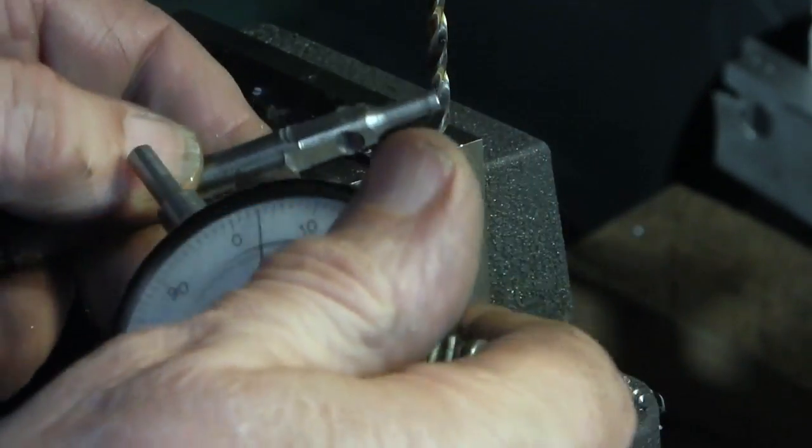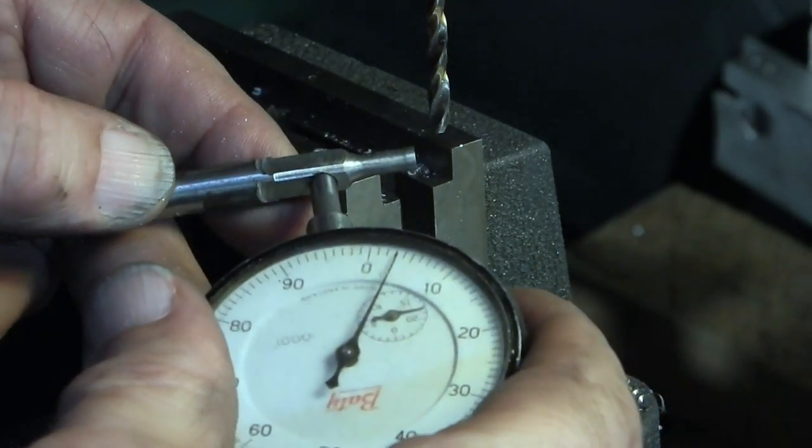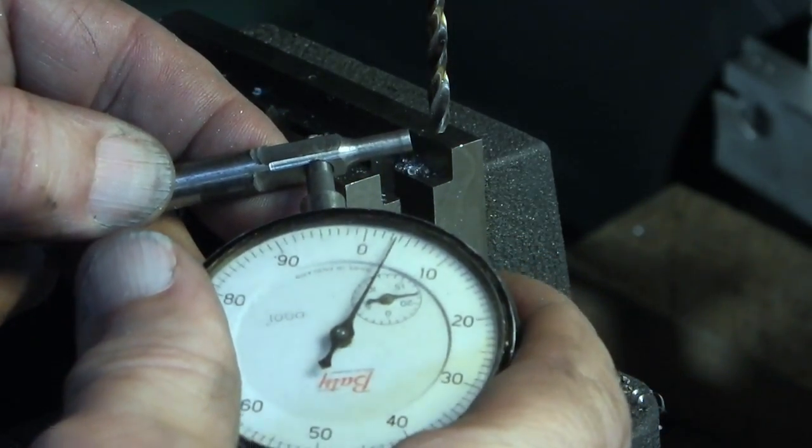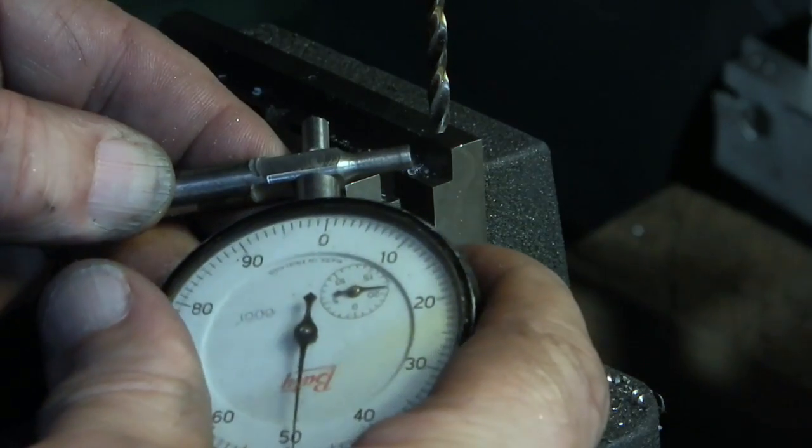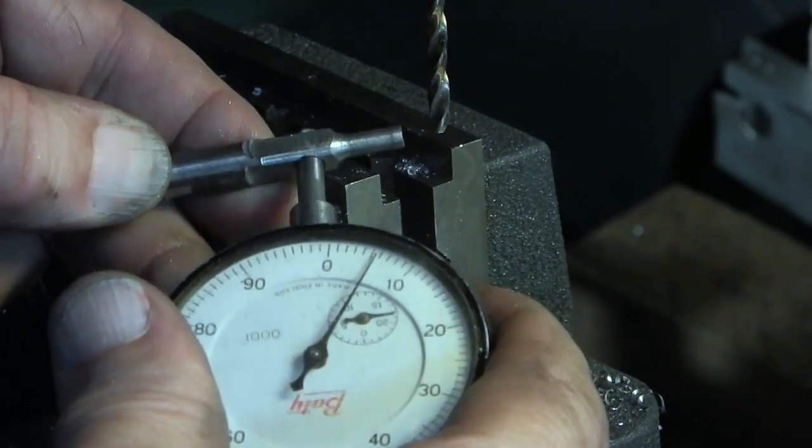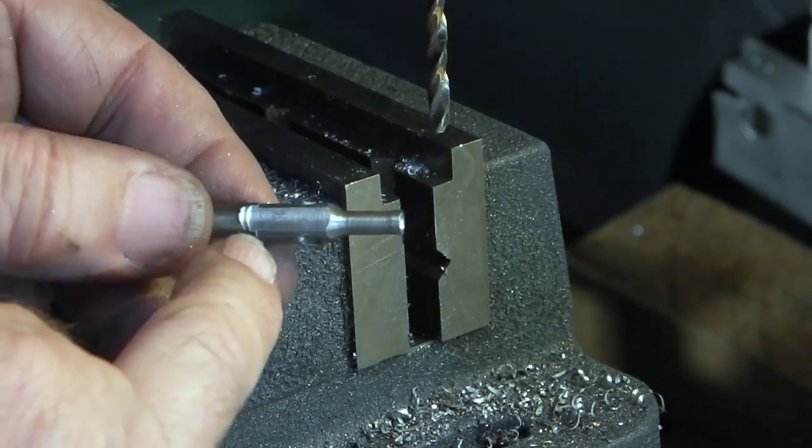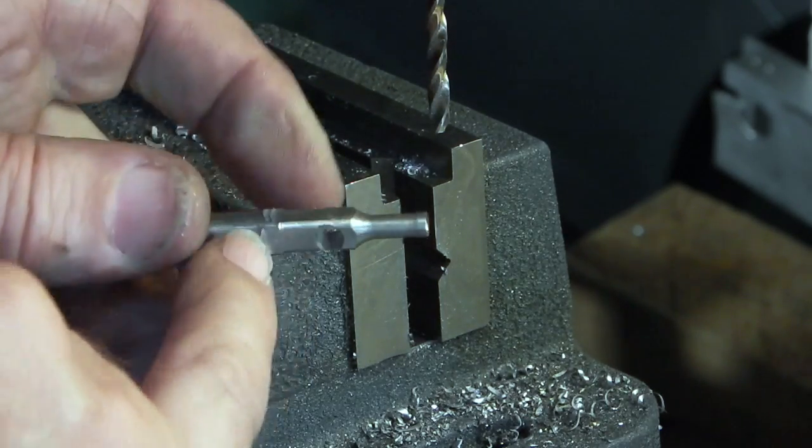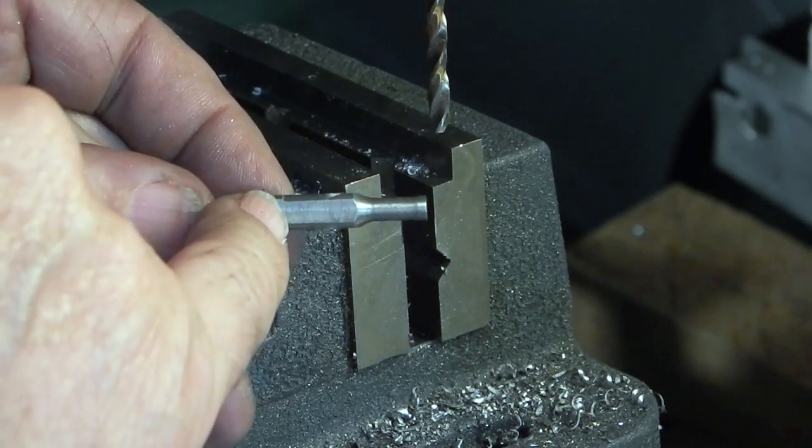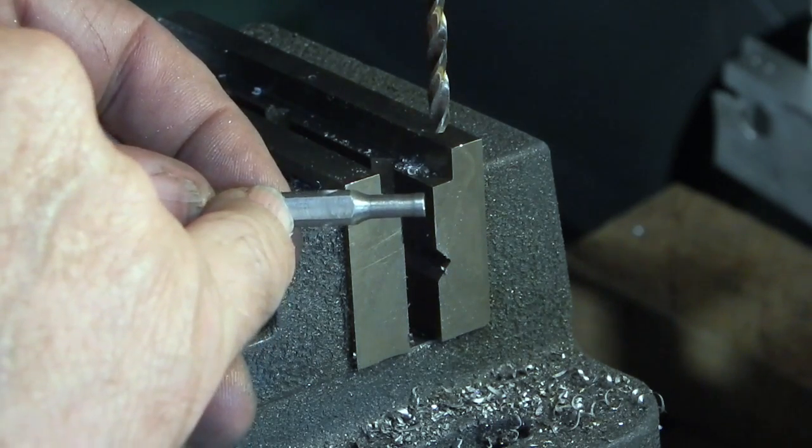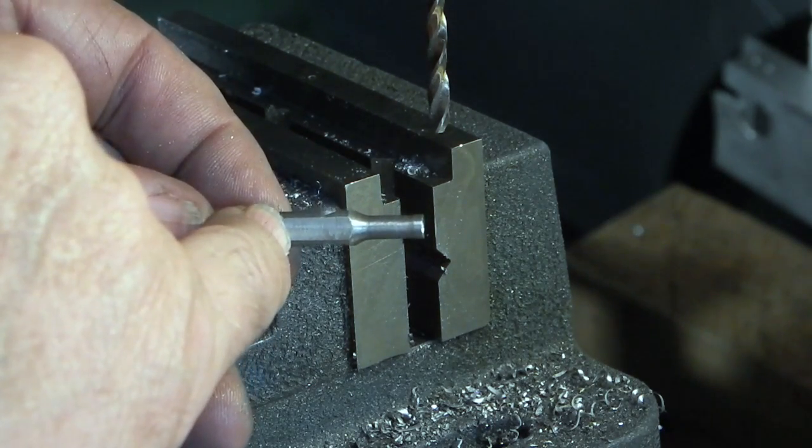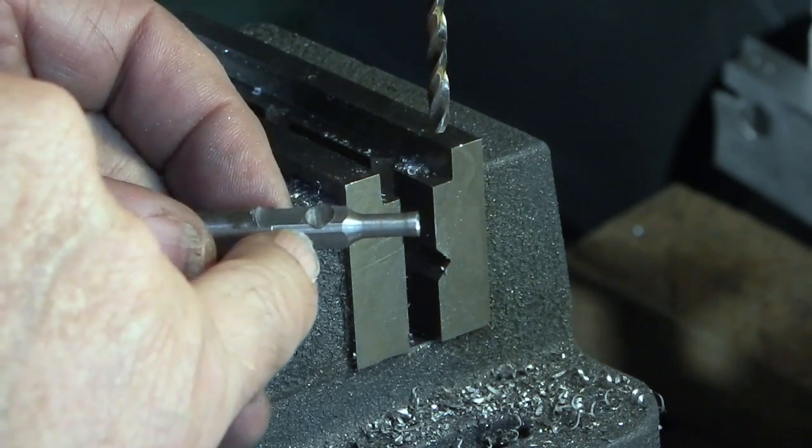So the hole you drill should be big enough to fit over the dial indicator. So now I want to drill another hole on the other, this one goes through where the two flats are, another hole here to go through for the locking screw.